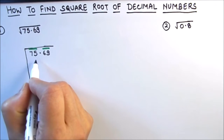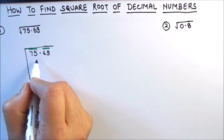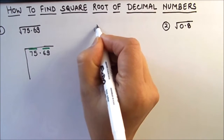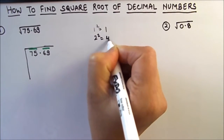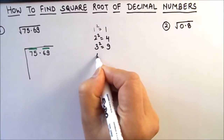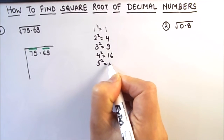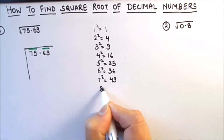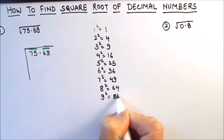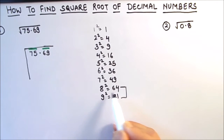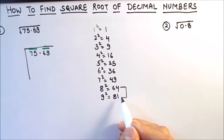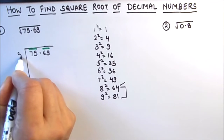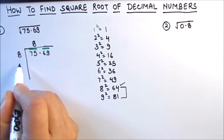Our first period is 75. The second step is to find a number whose square is equal to 75 or just less than 75. We know: 1²=1, 2²=4, 3²=9, 4²=16, 5²=25, 6²=36, 7²=49, 8²=64, 9²=81. Our number 75 lies between 64 and 81, so we use 8 as our first number. Eight is our divisor and quotient, and 8×8=64.